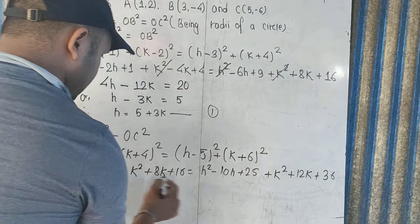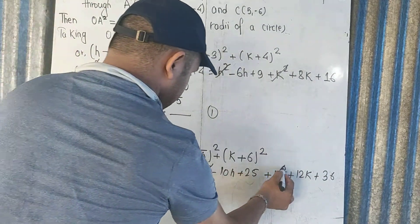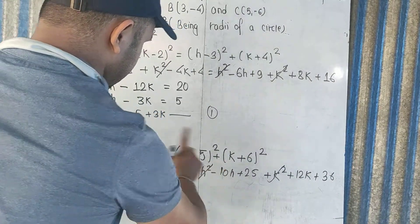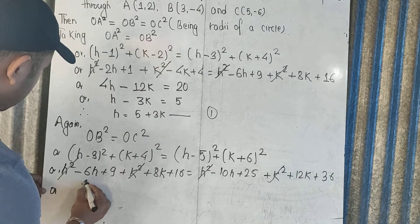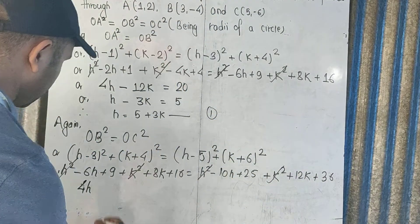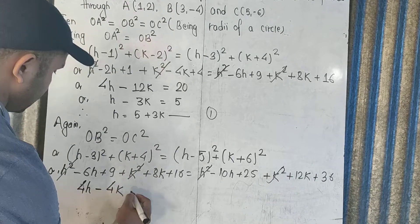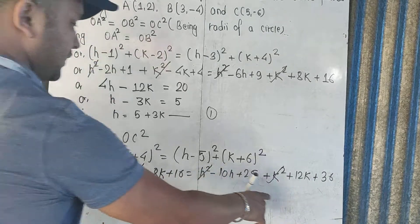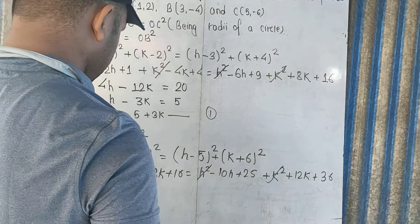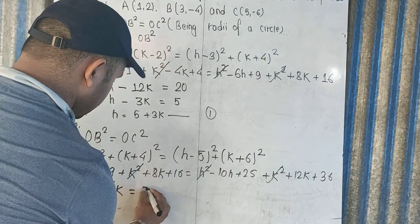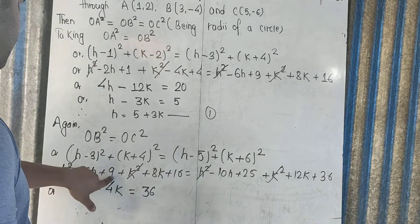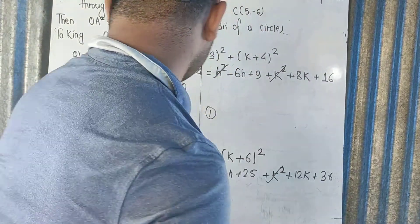Taking OB equals OC and expanding: H squared and K squared cancel. We get minus 6H minus 10H giving 4H, and 8K minus 12K giving minus 4K, equals 36 minus 25, which equals 41. Then 41 minus 25 gives 16, and 16 plus 9 gives 25, so the constants simplify to 36.